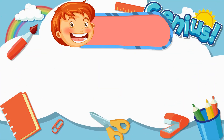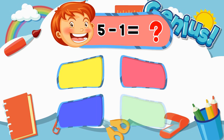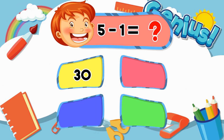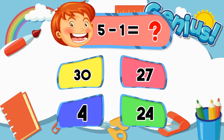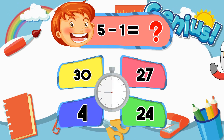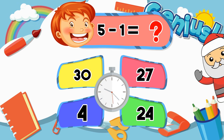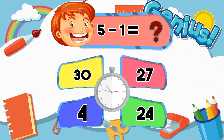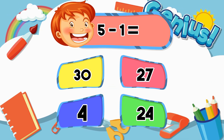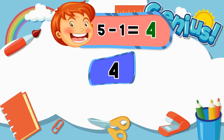What is 5 minus 1? 30. 27. 24. Correct answer: 4.